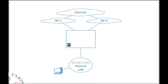Policy-based forwarding allows us to override the routing decision made by the routing table. For instance, if we have a default route pointing out to ISP1, we can use policy-based forwarding to say traffic from a specific subnet actually goes out of ISP2. This use case of having two independent ISPs is actually one of the most common usages for policy-based forwarding.